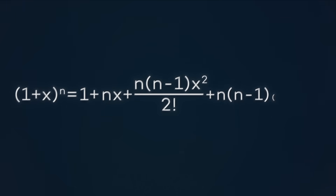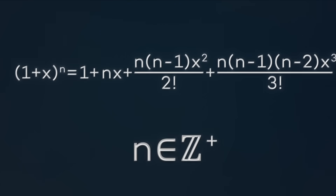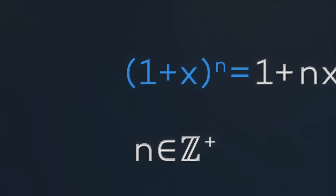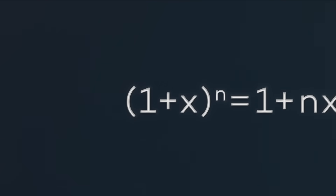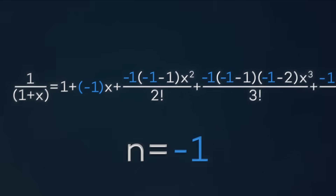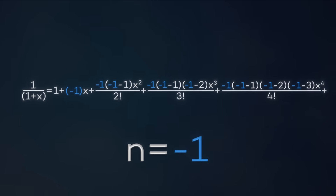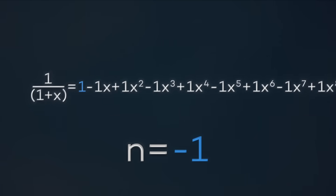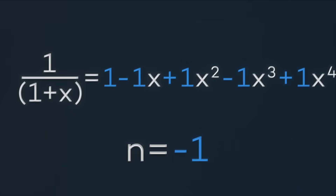The standard binomial theorem insists you apply it only when n is a positive integer, which makes sense — this is about multiplying (1+x) by itself a certain number of times. But Newton says, screw that, just apply the theorem. Math is about finding patterns and extending them to find where they break. So he tries (1+x)^(−1), which is 1/(1+x). Plugging in n = −1, the terms alternate: +1, −1, +1, −1, and so on forever.